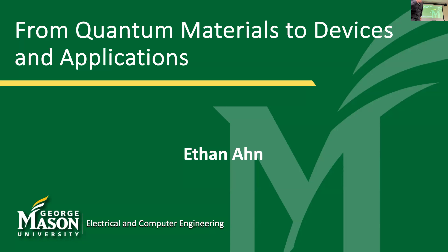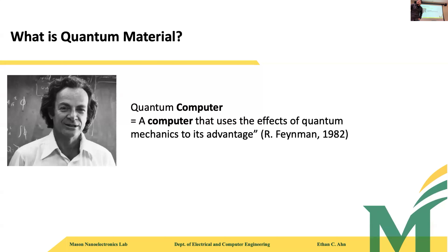My title is 'From Quantum Materials to Devices and Applications.' Before I start, I want to ask: can you define what a quantum material is? A quantum computer, for example, is a computer that uses the effects of quantum mechanics to its advantage. When I first saw this definition, I didn't really like it because it didn't seem to have any additional meaning beyond its name.